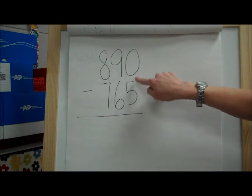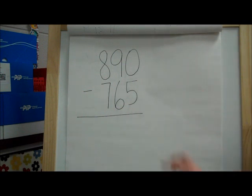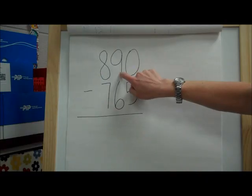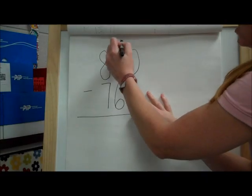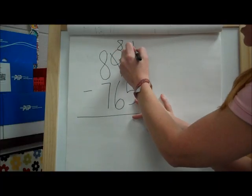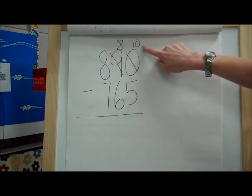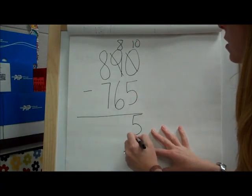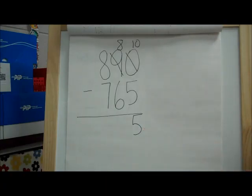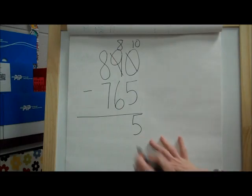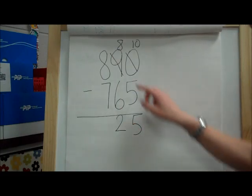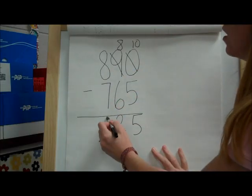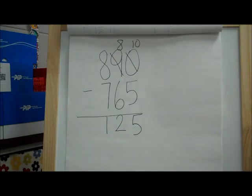0 minus 5, you cannot do. If you have 0 cookies, you can't give any of them away. So we go next door. 9 becomes 8. 0 becomes 10 because we added a group of 10 to that 0. 10 minus 5 is 5. See, that's what I meant when I said you would kind of be right, but in the long run you'd be wrong. 8 minus 6 is 2. And then 8 minus 7 is 1.